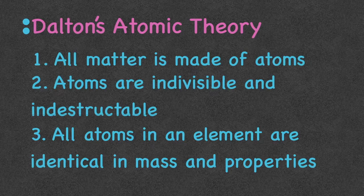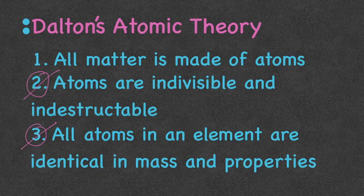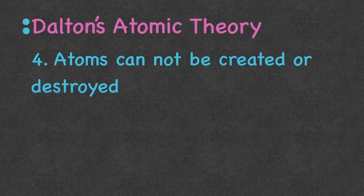So if you scooped up a bucket of gold, according to John Dalton, every single gold atom has the same mass and the same properties. This is another one we have proven not true — isotopes. Isotopes are two atoms of the same identity but with a different mass because of the number of neutrons. This third postulate of Dalton's atomic theory has now been proven not true.